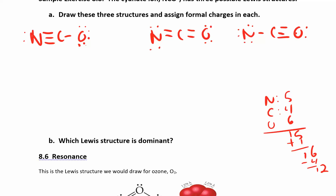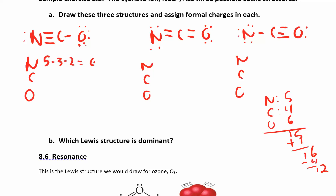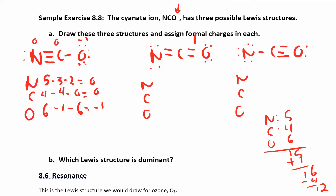Now we calculate formal charges for each structure. For NCO⁻ structure 1: nitrogen has 5 − 3 lines − 2 dots = 0; carbon has 4 − 4 lines − 0 dots = 0; oxygen has 6 − 1 line − 6 dots = −1. So the formal charges are 0, 0, −1, which adds up to −1 — consistent with the ion's charge.